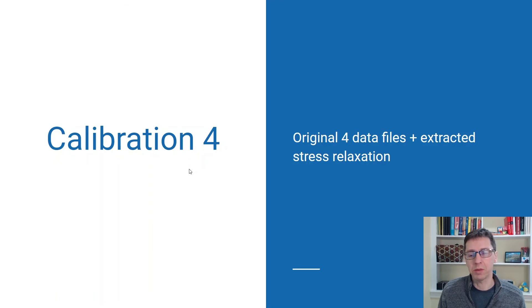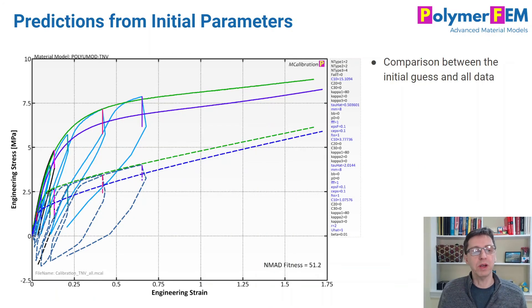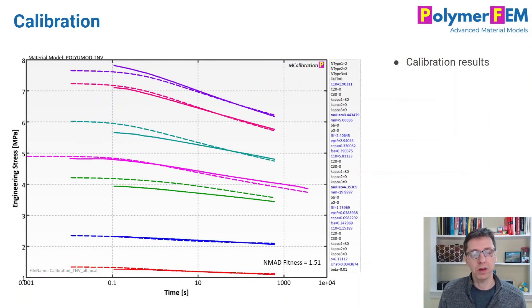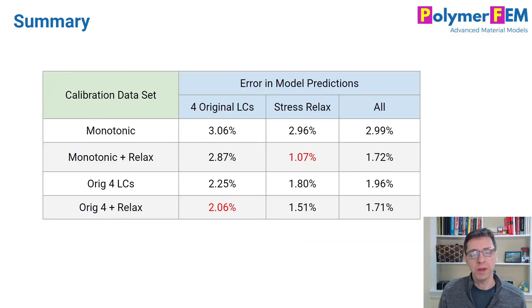The last calibration I want to talk about is when we use all data at once that we talked about and tried to calibrate to that. This is the final results. I get an error of 1.7%. This is the best. This is the most accurate for this case. And that is not surprising. We use all the data that we want to predict during the calibration. That gives us the best predictive model in the end. Here are the different figures with the stress relaxation and all of that.